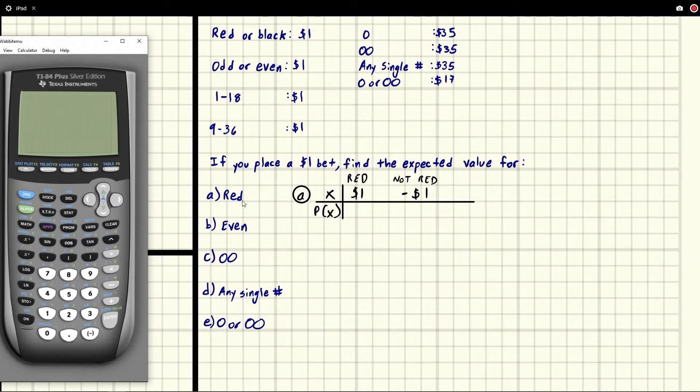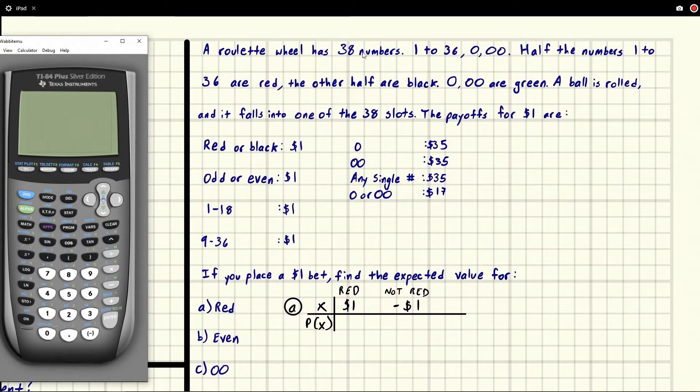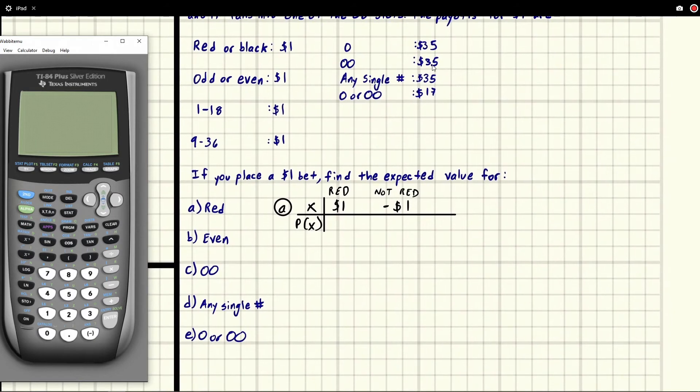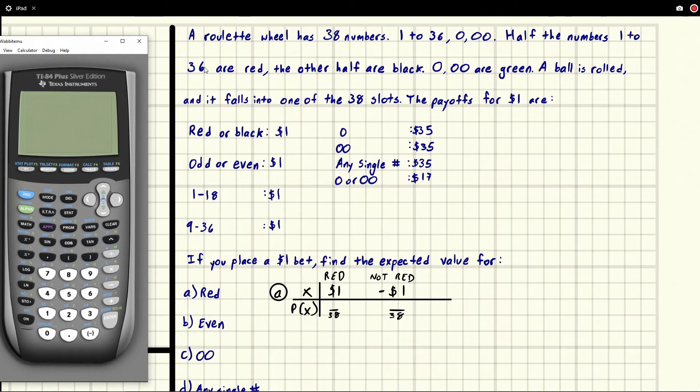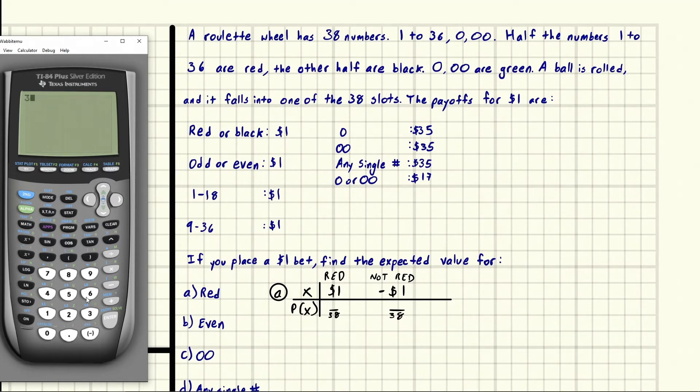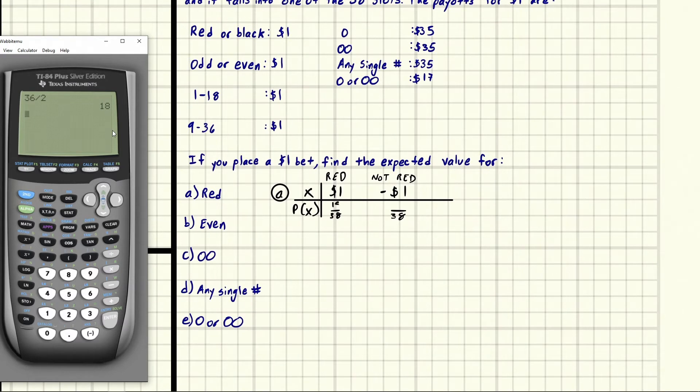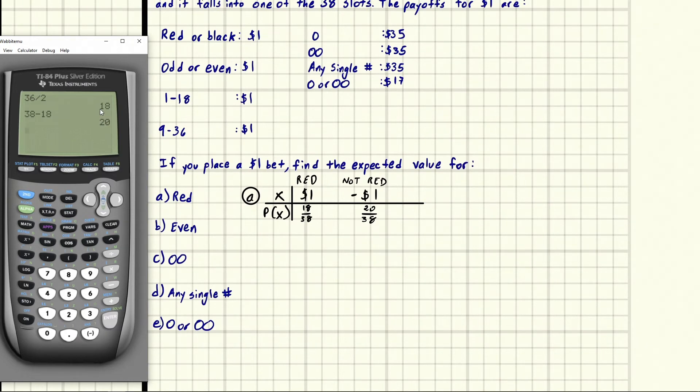For the red, how are all the ways we can get red? Well, let's check this out. First off, our sample space - we have 38 numbers, 38 spots. So we've got over 38 for everything. And then we want to know all the red numbers. So we say half the numbers 1 to 36 are red. So there's 36 numbers total. We divide this in half and we get 18. So that means there are 18 ways to get red. But there are 38 spots total. So if we have 38 - 18, we're going to get the remaining spots. So there's 20 spots remaining. These are all the spots that are not red.